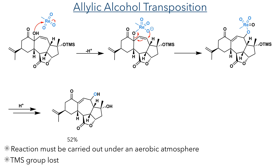This alcohol then took part in an allylic alcohol transposition. It reacts with methyl trioxorhenium, which then undergoes an intramolecular rearrangement, attacking the double bond, causing it to migrate, and eliminating the rhenium-coordinated oxygen. This complex is then hydrolyzed to form the allylic alcohol in a 52% yield, together with loss of the TMS group.